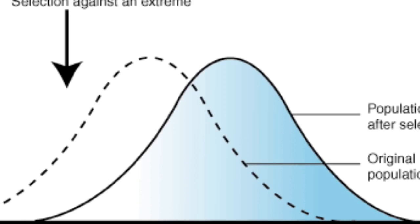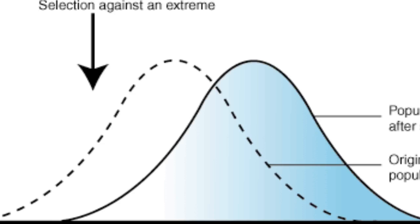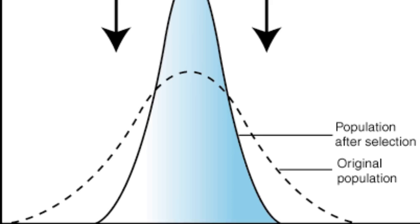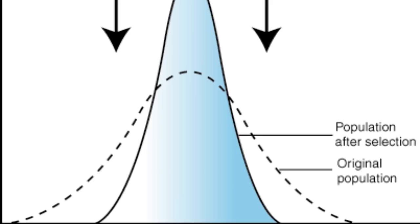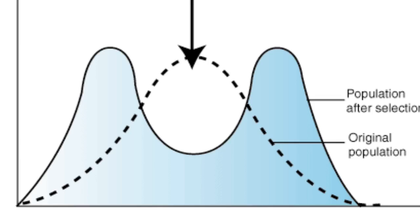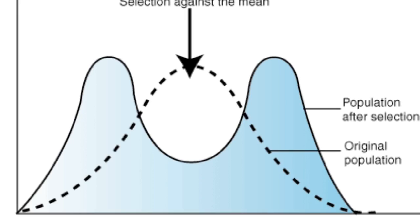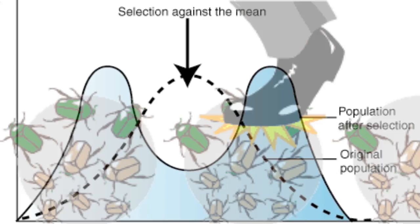Directional selection is a form of natural selection in which individuals at one end of the distribution curve have higher fitness than individuals in the middle or the other end of the curve. Stabilizing selection is a form of natural selection in which individuals near the center of the distribution curve have higher fitness than individuals at either end. Disruptive selection is a form of natural selection in which individuals at the upper and lower ends of the curve have higher fitness than individuals near the middle.